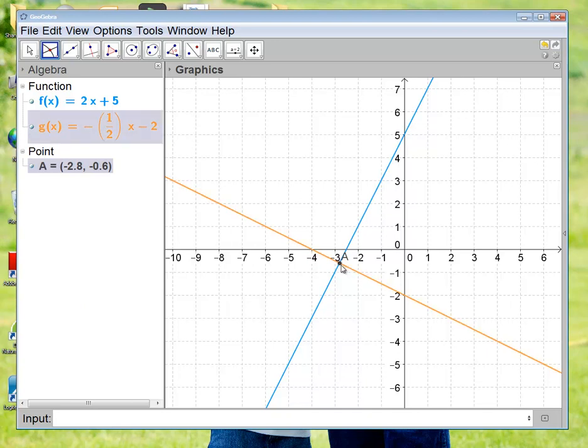Okay, and it's shown me that that is point A, and the coordinates of that is negative 2.8, negative 0.6. And as we go along and start solving linear equations, you will come to find out that that is the solution to f of x equals g of x is their point of intersection.